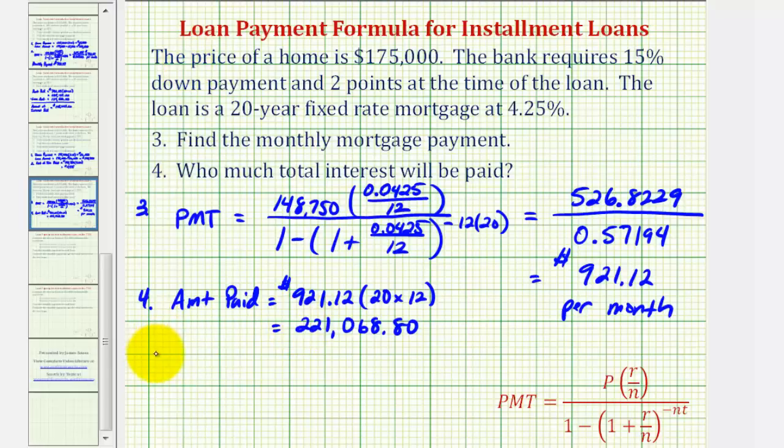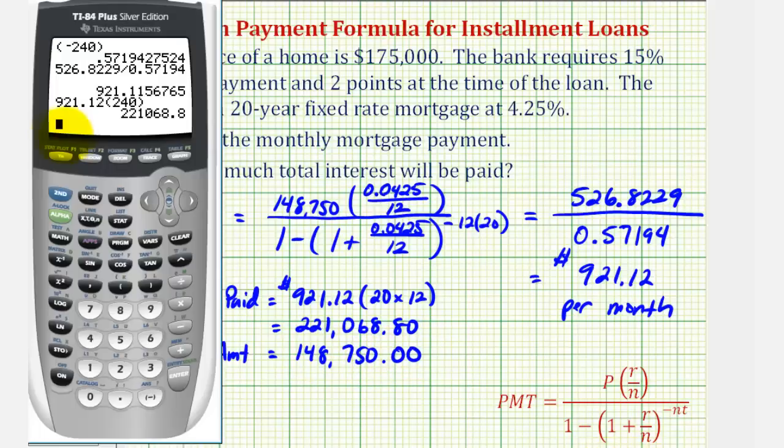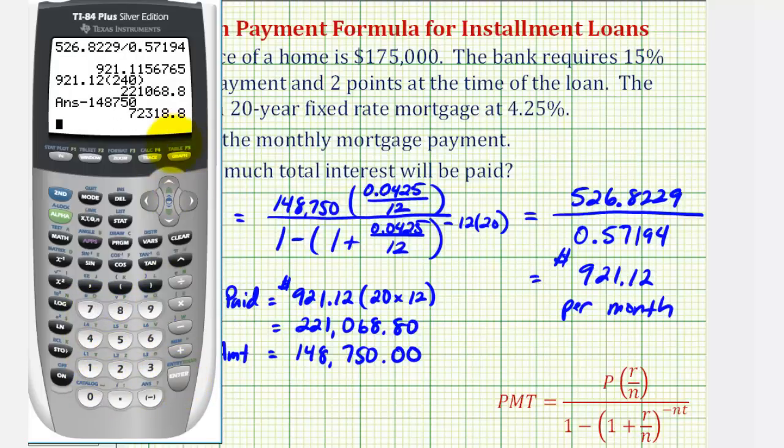Now we're going to subtract the loan amount, 148,750 dollars. Since we already have the total amount paid in the calculator, we can just press minus 148,750, enter. And so the total interest would be 72,318 dollars and 80 cents.